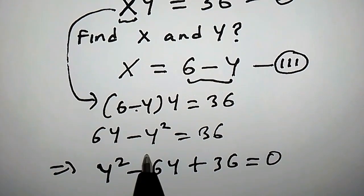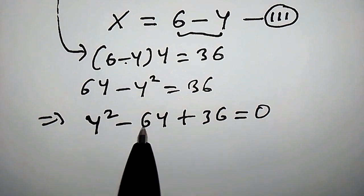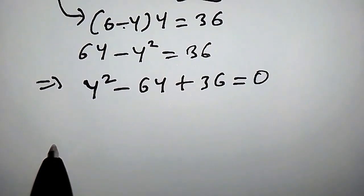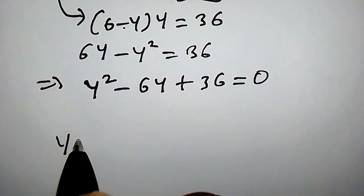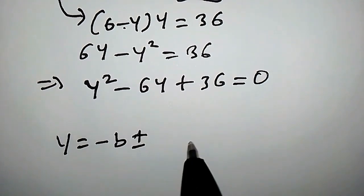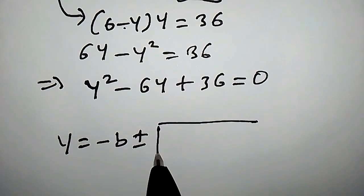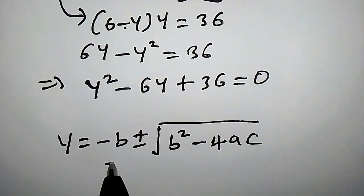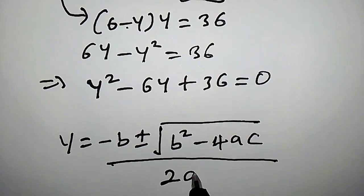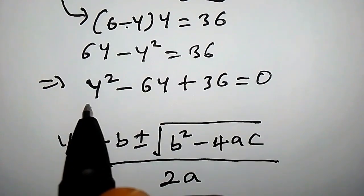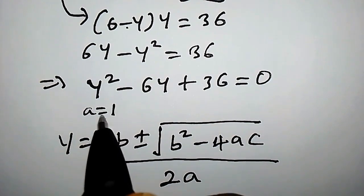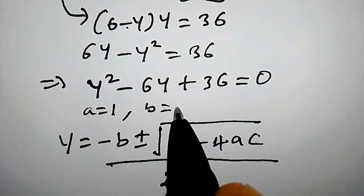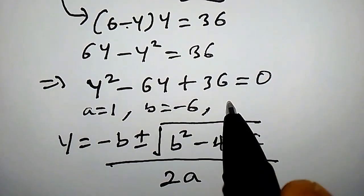You will observe that this is a quadratic equation and we can solve it using the quadratic formula. The quadratic formula says y is equal to minus b plus or minus square root of b squared minus 4ac, all divided by 2a. From this quadratic equation, a is 1 (coefficient of y squared), and b is equal to minus 6.